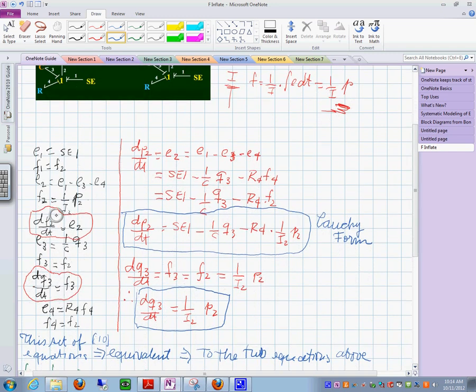We ended up with two of those. What I did next is I have this D piece of 2DT and did the substitutions. I ended up with two equations that are called the Kochie form.